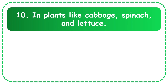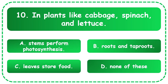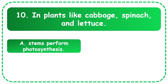Plants like cabbage, spinach, and lettuce — the options are stems perform photosynthesis, roots and tap roots, leaves store food, or none of these. The correct answer is stems perform photosynthesis. Thank you.